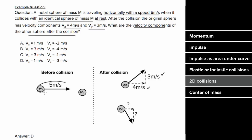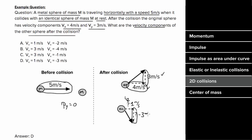We started with 5 units of momentum in the x direction, so the x component of the second sphere must be 1 meter per second. We started with no momentum in the vertical direction, so the second sphere must have 3 meters per second vertically downward after the collision, giving us answer D.